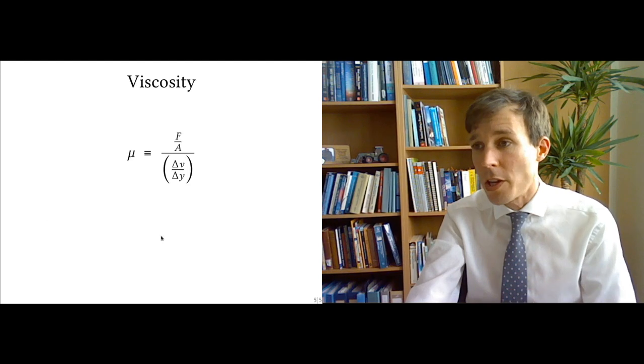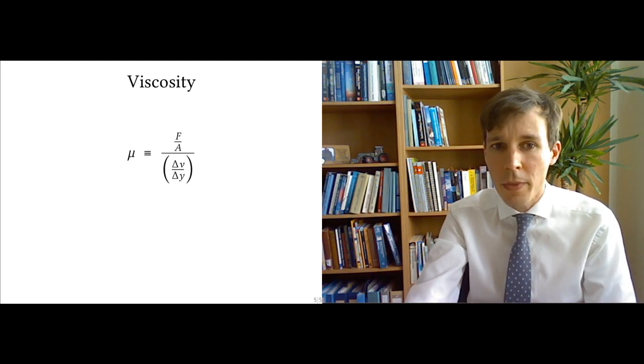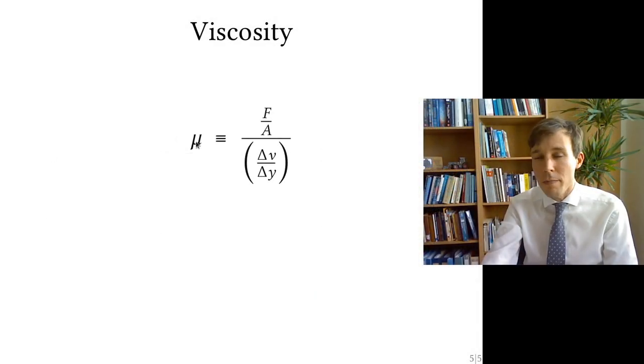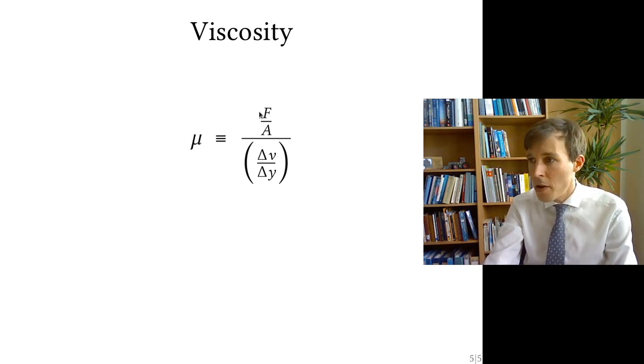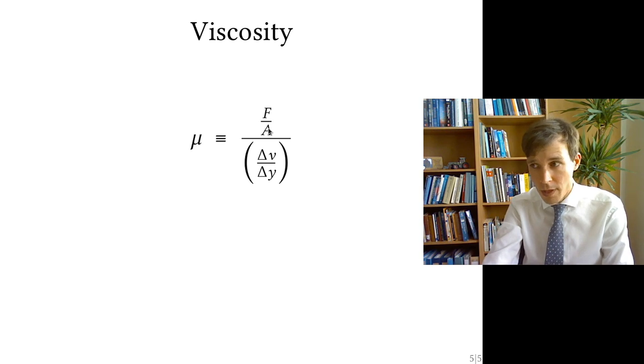And this gives us the equation, which is like so here. Here, viscosity mu, a Greek letter mu, is defined as the force per area on top, divided by the delta v, divided by the delta y.